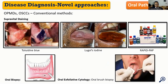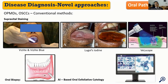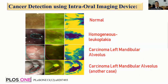In terms of disease diagnosis and novel approaches, we know that traditionally, methods like supravital staining using toluidine blue and Lugol's iodine, rapid Papanicolaou staining, oral exfoliative cytology, and oral biopsy have been used to detect oral potentially malignant disorders and oral squamous cell carcinoma. With the advent of artificial intelligence and other methods, we have seen VELscope and VELscope blue light devices, devices using the VizLite scope, and AI-based oral exfoliative cytology systems. Harnessing the power of AI, cancer detection using intraoral imaging devices has also been performed, with algorithms capable of differentiating normal mucosa from leukoplakia and carcinoma.